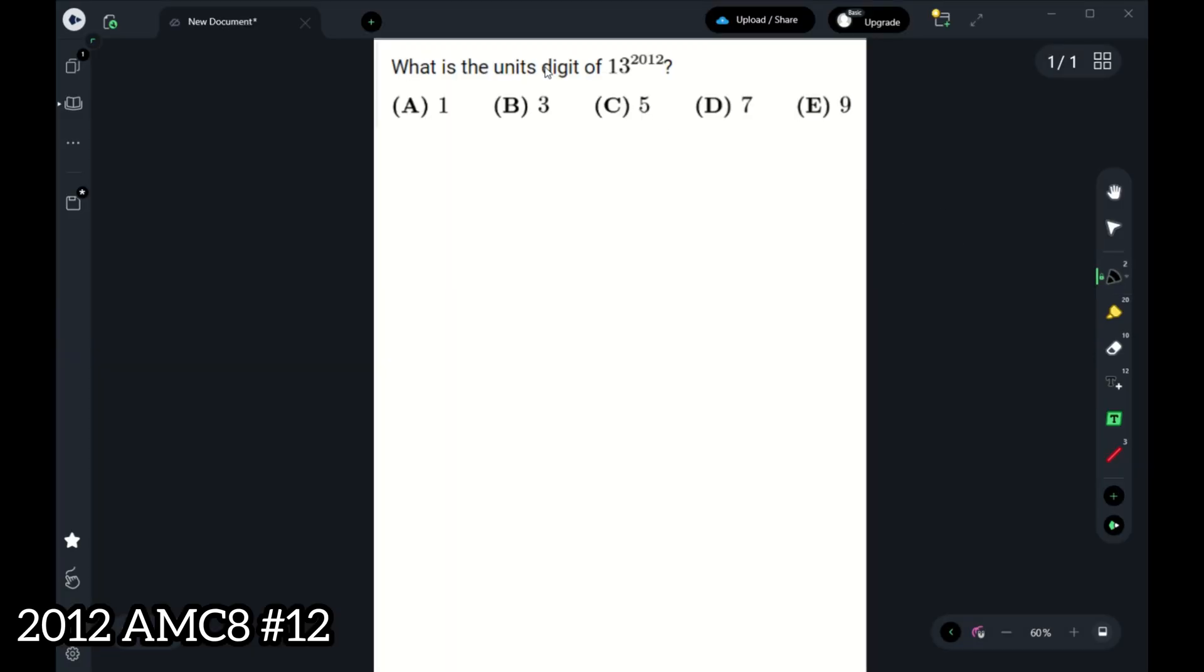The question is, what is the units digit of 13 to the power of 2012? Let's see. The units digit of 13 is 3 when it's to the power of 1. When it's to the power of 2, it's then 9. When it's to the power of 3, it will then turn into 7. And finally, when it's to the power of 4, it will then turn into 1. And then the cycle repeats again and again forever.